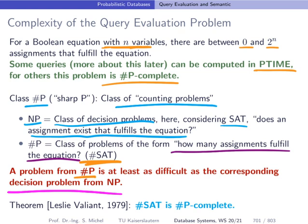So this is not good. In particular, since there's a theorem from Leslie Valiant from 1979, which says that sharp SAT is sharp P-complete. This is a problem. It cannot be handled efficiently. So we have to come up with a different way to compute these probabilities for our possible tuple semantic.